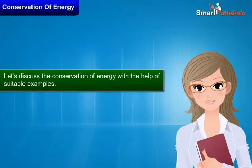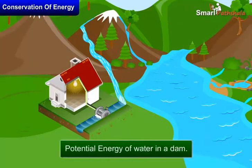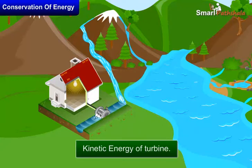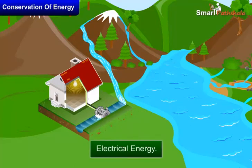Let's discuss the conservation of energy with the help of suitable examples. When water falls from a certain height, the potential energy of water in a dam is converted into kinetic energy of the turbine, which rotates the turbines and finally gets converted into electrical energy.